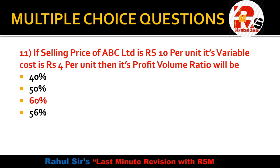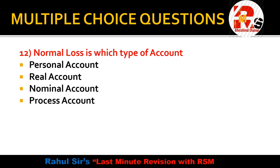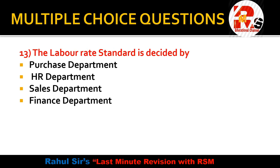Question number 12: Normal loss is which type of account — personal account, real account, nominal account, or process account? Normal loss is a type of expense for us, and expense accounts are nominal accounts. So the right answer is nominal account.